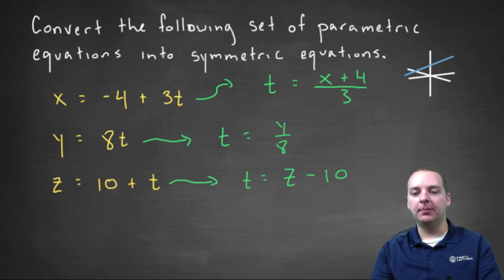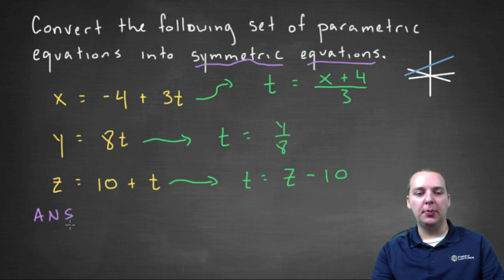So our final answer, here's our set of symmetric equations right here. I'll do this in purple. We would get x plus four over three equals y over eight, which equals z minus ten.